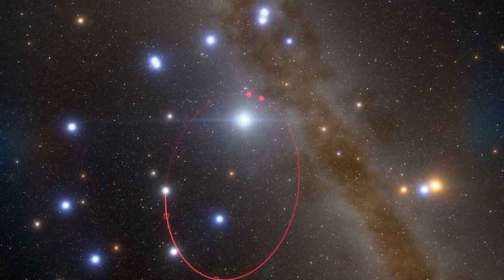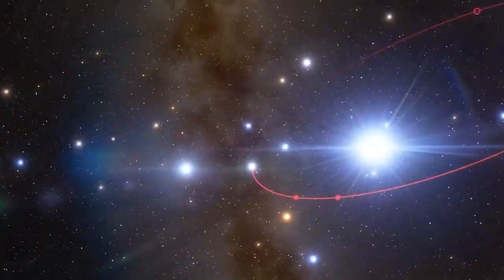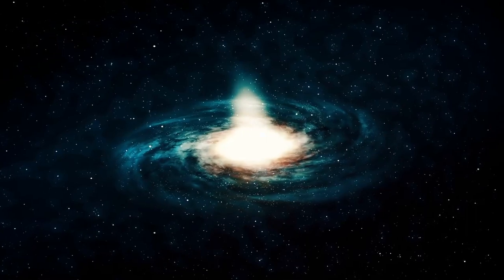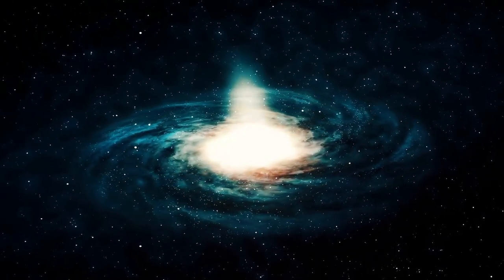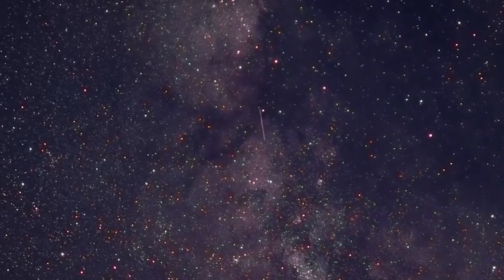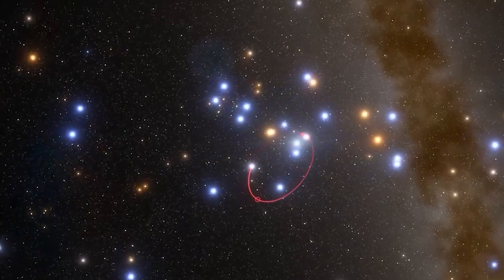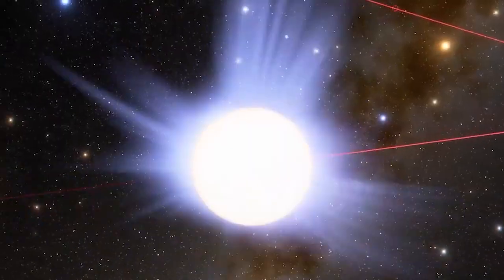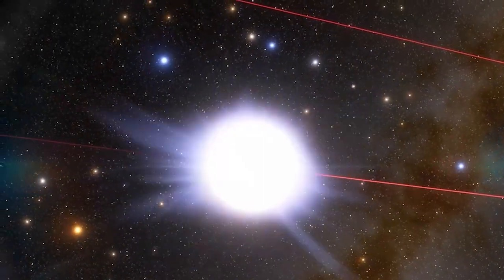Astronomers have discovered a star that orbits the supermassive black hole at the center of our galaxy every four years. That's the shortest orbit ever observed around a supermassive black hole. The newly discovered star, called S4716, is about four times more massive than our Sun and twice as hot.